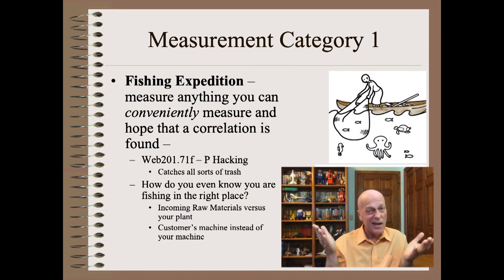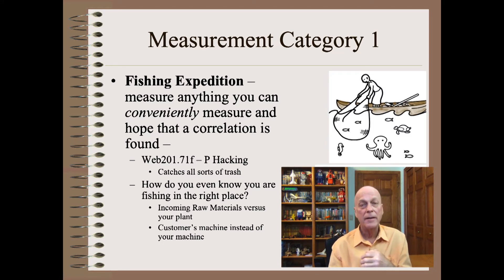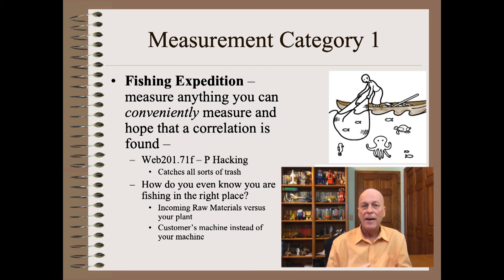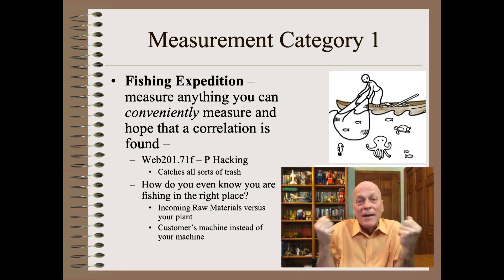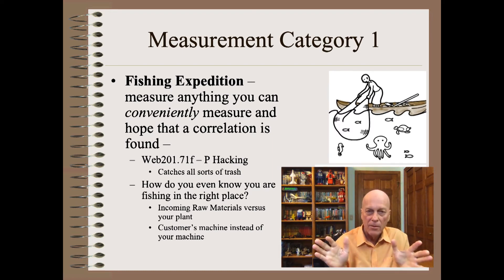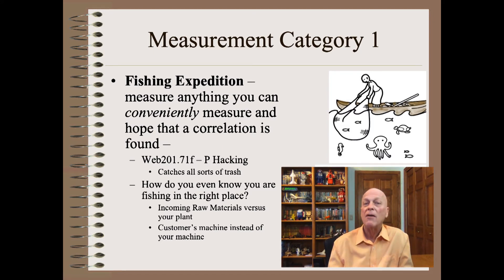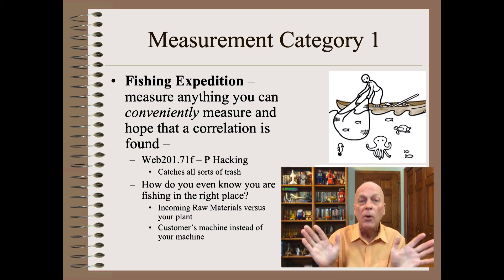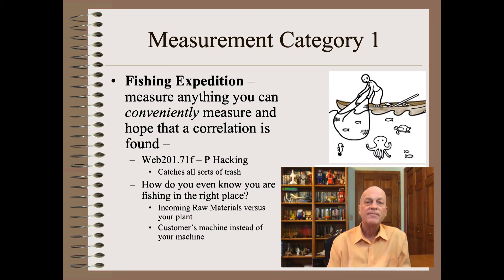The first and most common is what I call the fishing expedition. Here you measure anything that can be conveniently measured — usually some mix of customer returns, machine and lab data — and cross your fingers and hope that some correlation will be found. While this smacks of desperation, sometimes this is the best or only way to get started. Nonetheless, there are enormous problems with this approach. The first is the very real risk of p-hacking — a statistical sin we will cover in an upcoming clip. Note that if you measure enough things, you absolutely will find correlations without causations. In layman's terms, you will catch all sorts of trash fish.